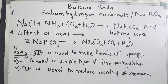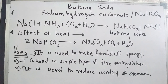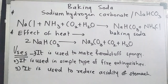Sodium bicarbonate has several uses. When added to foodstuff, it releases CO2 gas and makes the foodstuff spongy. It is used in simple fire extinguishers, where CO2 gas is needed to extinguish fire, and sodium hydrogen carbonate is the source of that CO2. It is also used to reduce acidity of the stomach because it is alkaline or basic in nature, and bases neutralize acids.